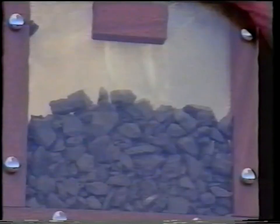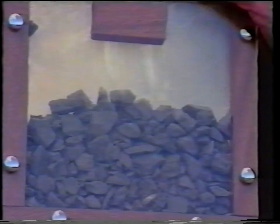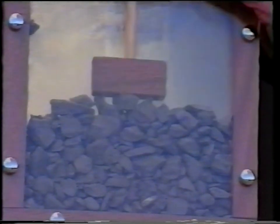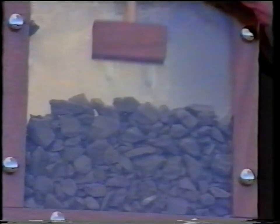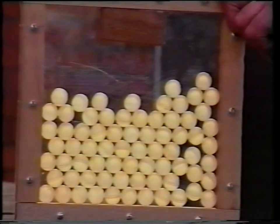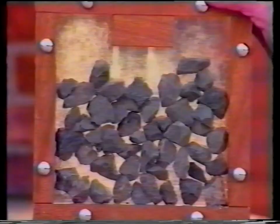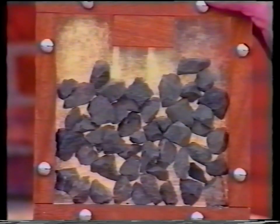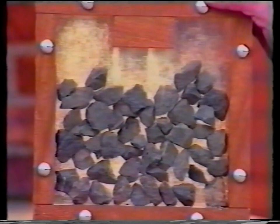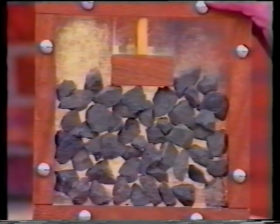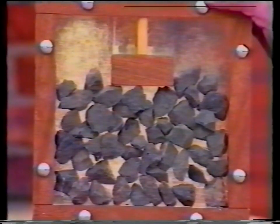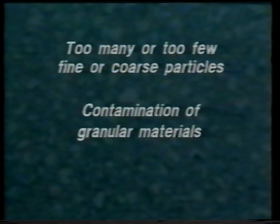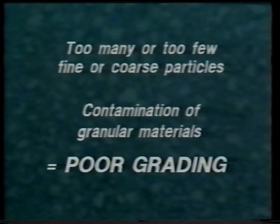When compacted, the larger particles lock together and the smaller particles fill the gaps to give a dense, strong and stable layer. Compare this to a uniform grading where particles are about the same size, or gap grading where there is a gap in the particle size range. Neither of these grading types provides the required strength or stability. Too many or too few fine or coarse particles, or a contamination of granular materials, are also examples of poor or unacceptable grading.